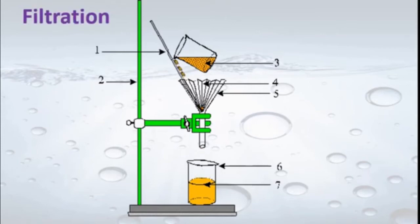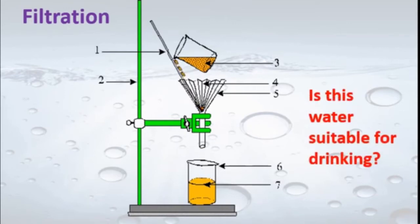We take one funnel and filter paper, or alternatively a cotton cloth folded into four layers. When we pour water through it, the floating particles and soil particles stay on the cloth, and the clear water moves down and collects in the beaker. We got clear water — but is this water suitable for drinking? No.